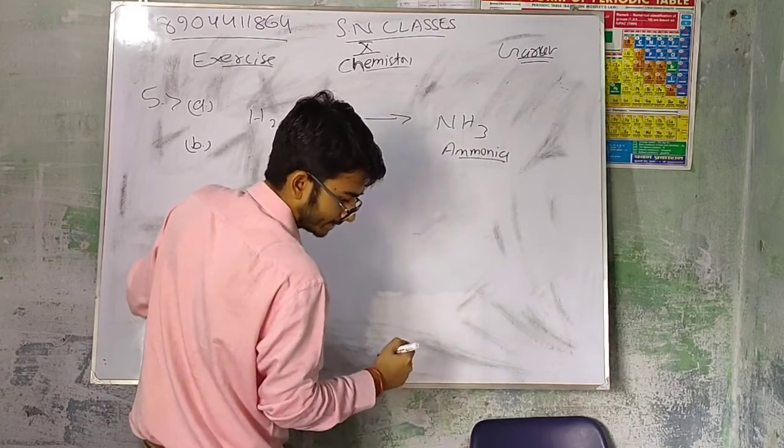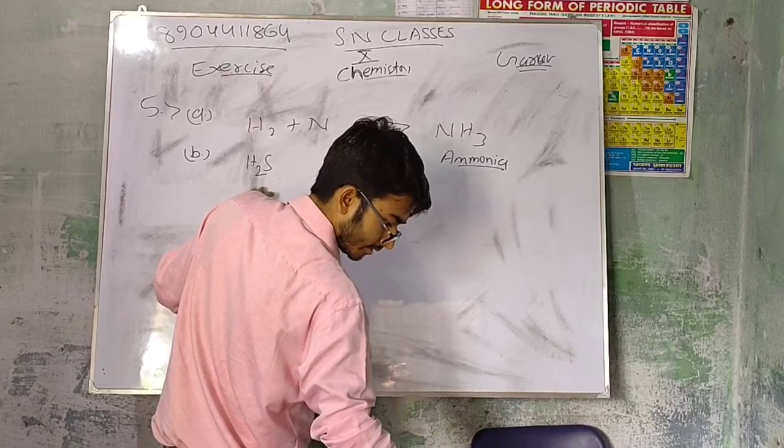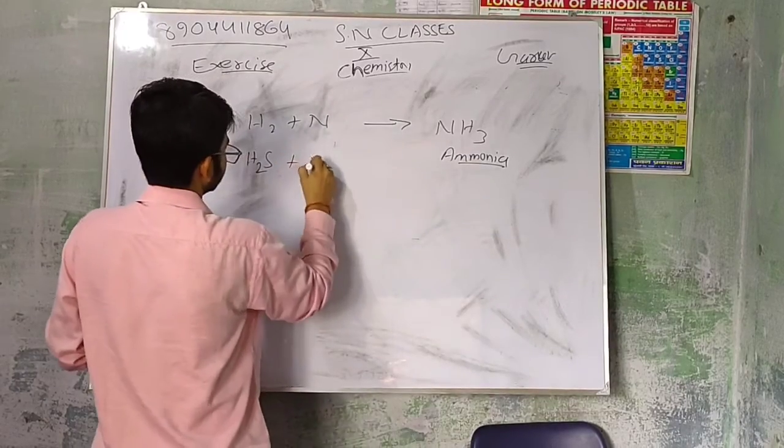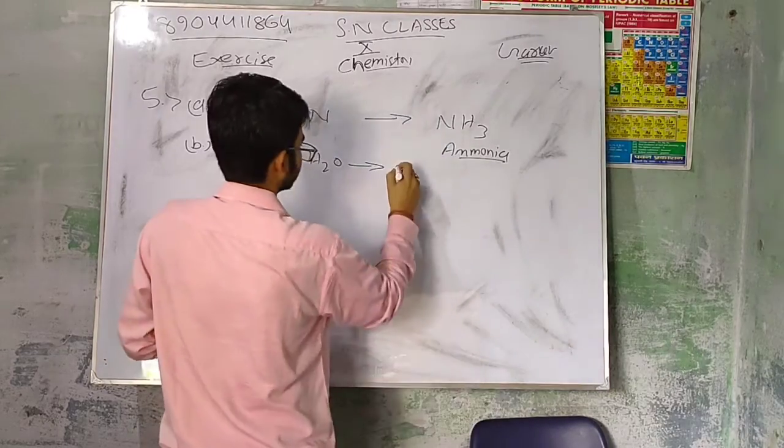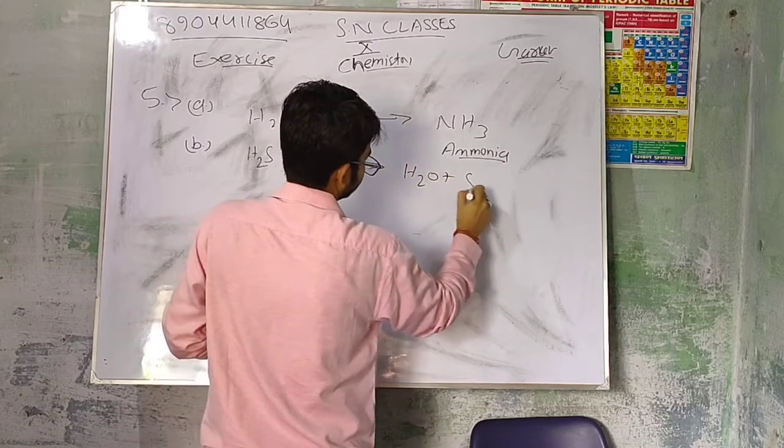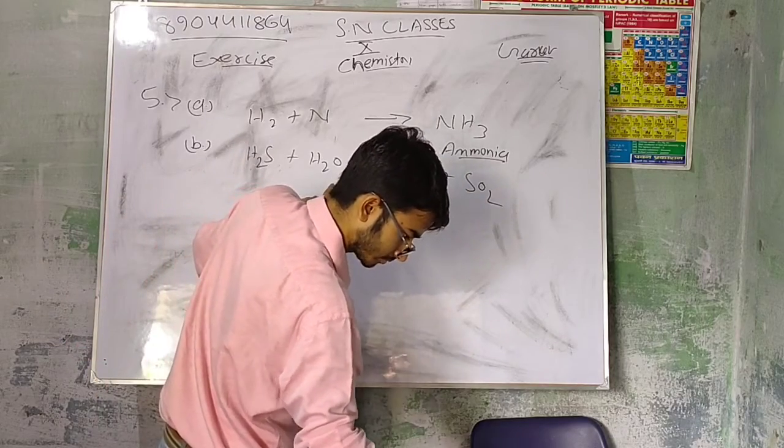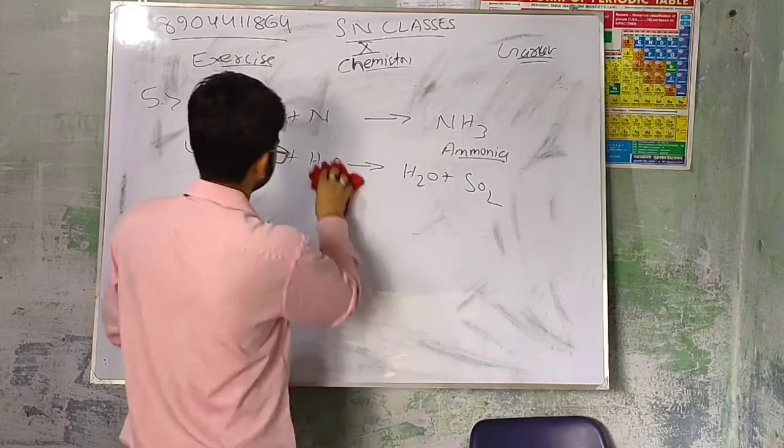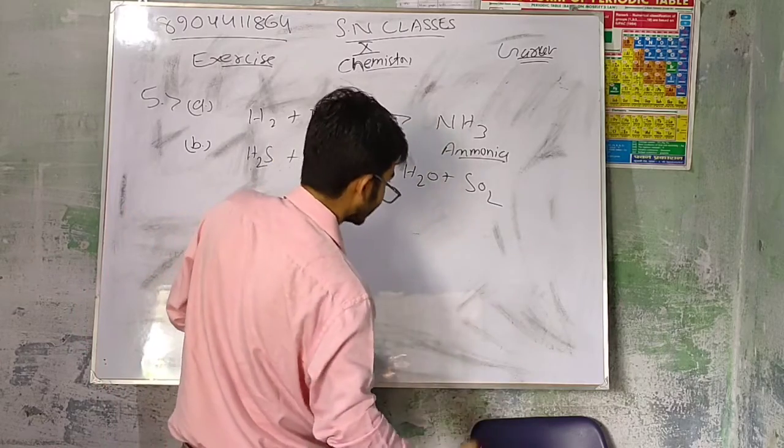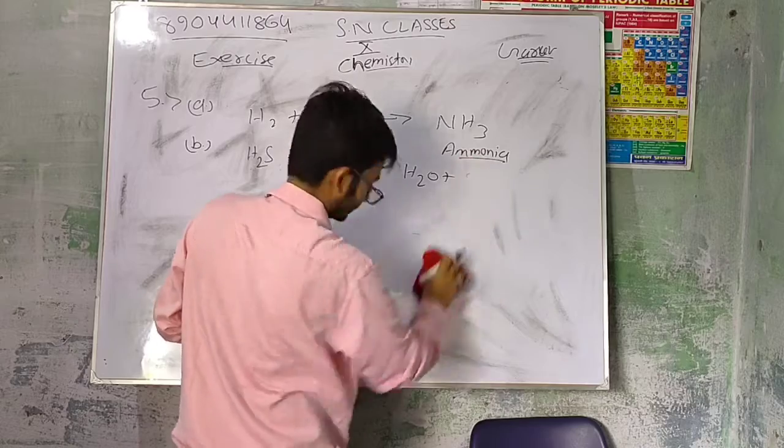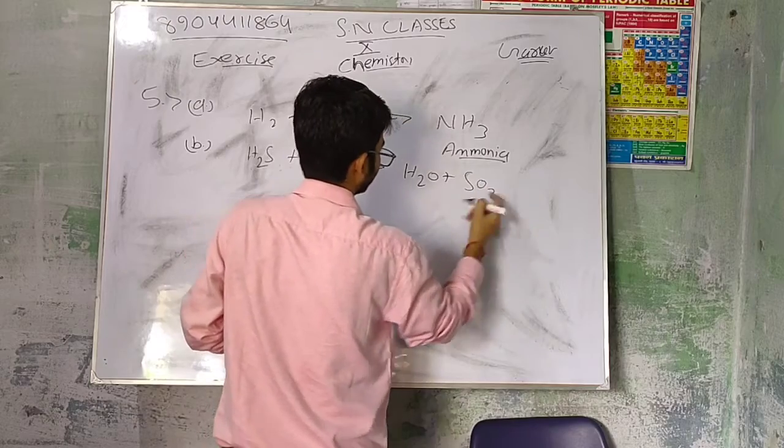Question number 2: Hydrogen sulfide, meaning H2S, burns in air to give water and sulfur dioxide. Burns in air to give water and sulfur dioxide. Now we have to balance this equation. Air means oxygen. To give water and sulfur dioxide. Balance this.